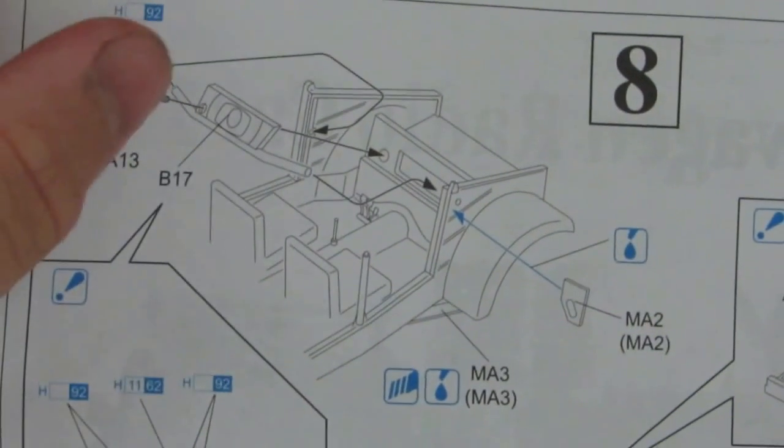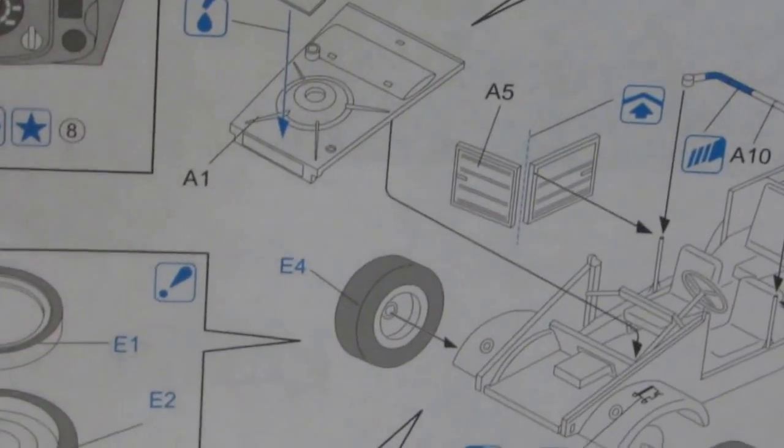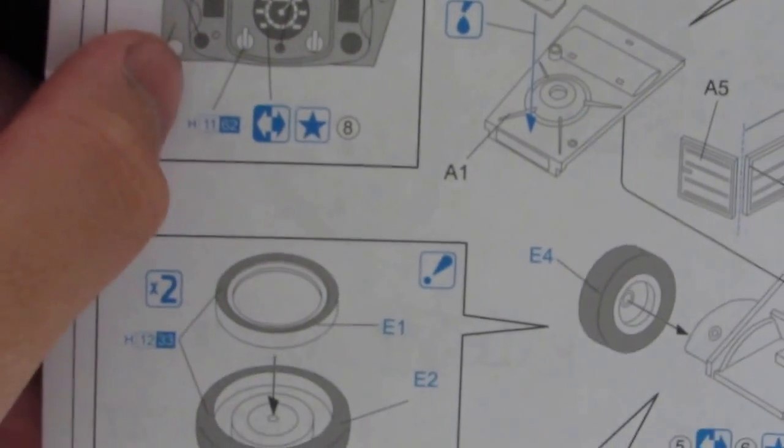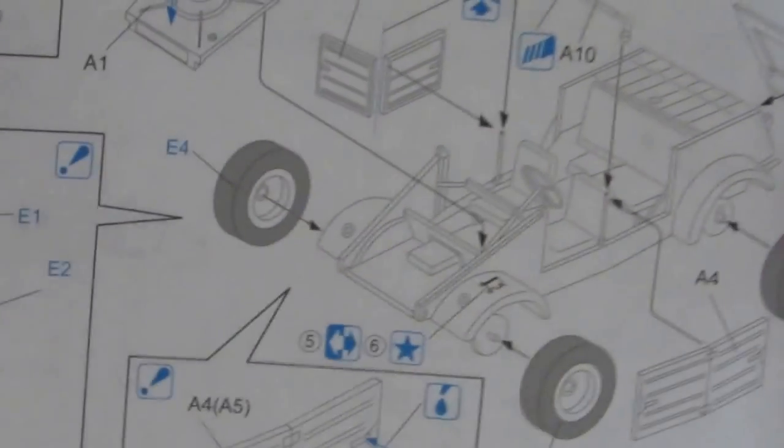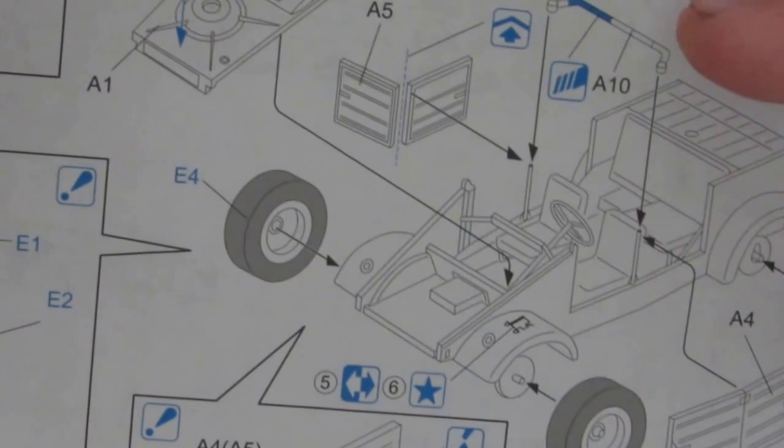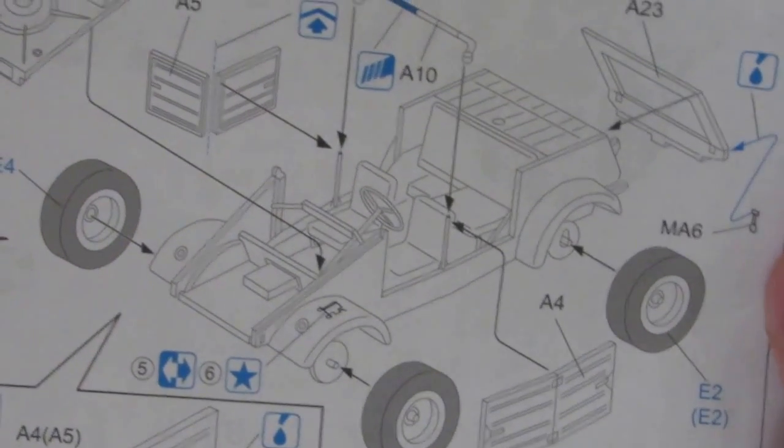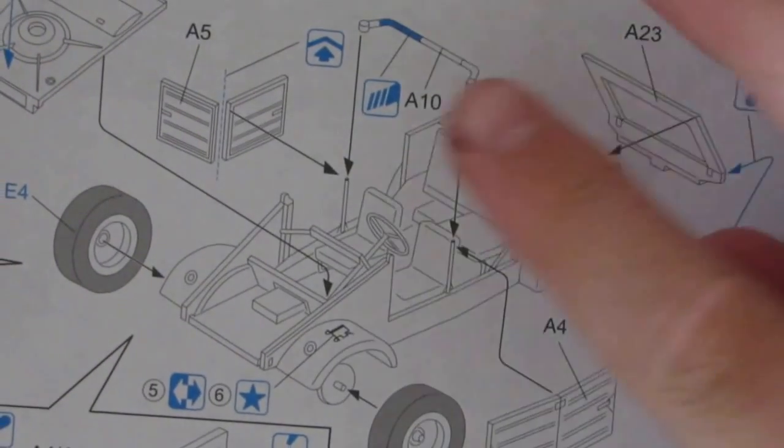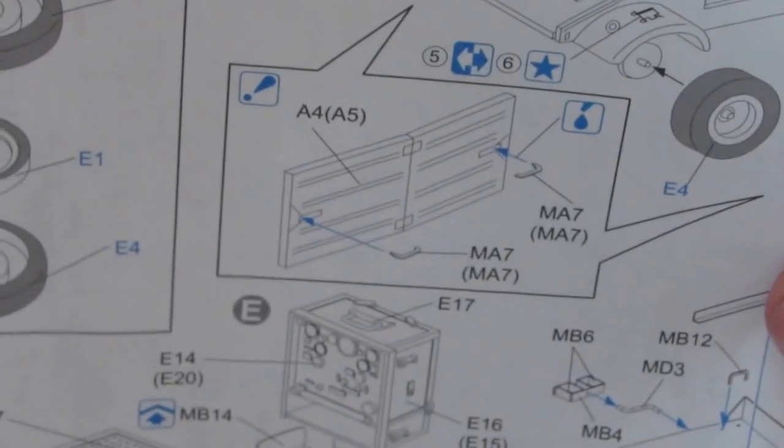Putting in the steering wheel. Some photo etch there. There's your dash. That would appear, yeah, certainly your dash. Then putting on the wheels. Some more photo etch there. More hack and slash.